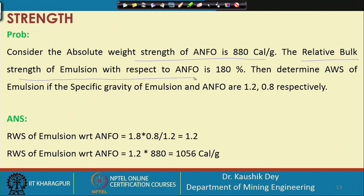The relative bulk strength of emulsion with respect to ANFO is 180%. Determine the absolute weight strength of the emulsion if the specific gravity of emulsion and ANFO are 1.2 and 0.8 respectively. First, we find the relative weight strength of emulsion with respect to ANFO: 1.8 × 0.8 / 1.2, using the ratio of densities.